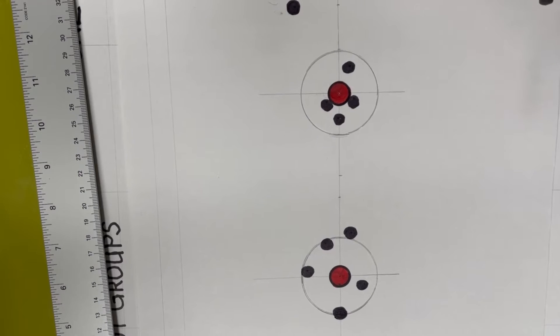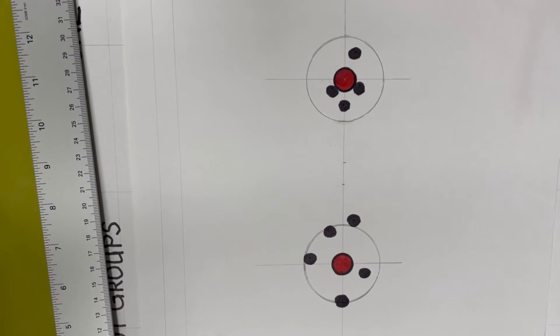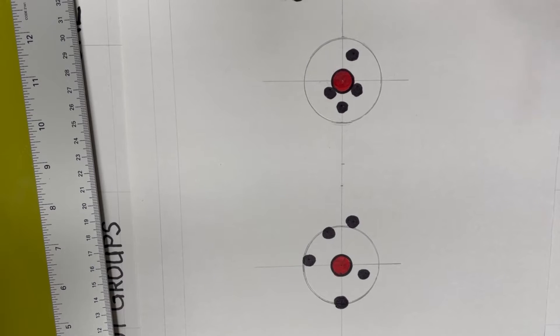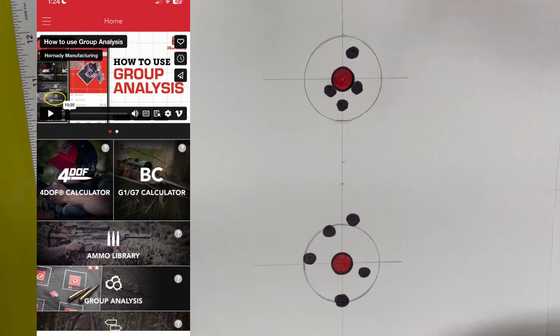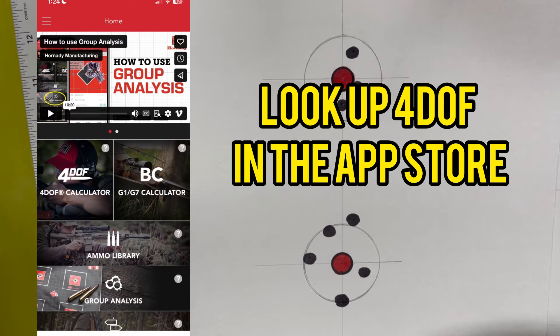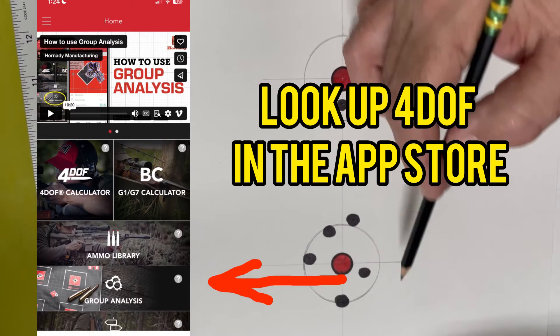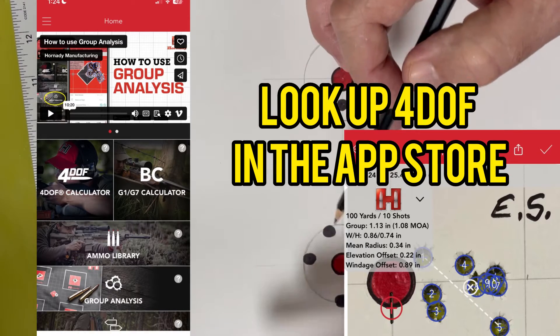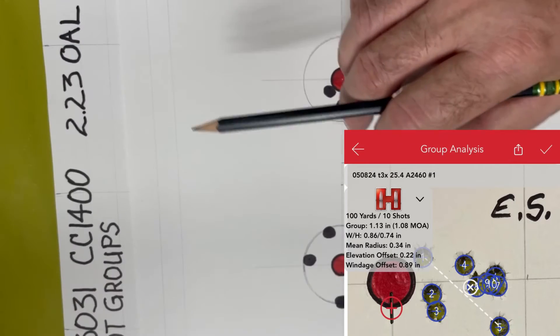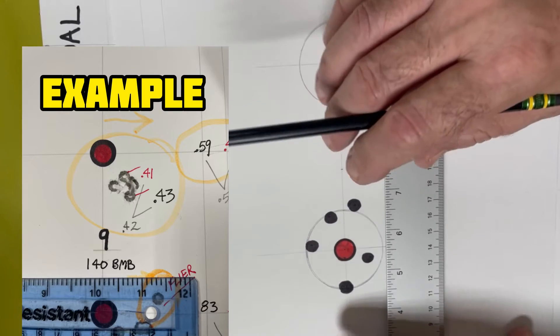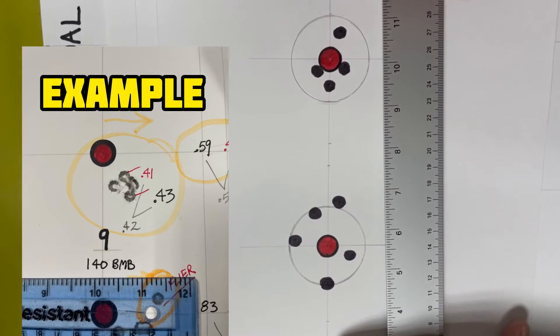Now, the best way, in my opinion, to measure mean radius, and the simplest and easiest way, is with the Hornady 4DOF Ballistics app. There's a tab in there that you click on for group analysis, and it measures all of the shots, and it uses a standard to measure by. Here's an example right here.